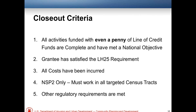To close out your grant, every activity funded with even a penny of line of credit funds needs to be complete and have met a national objective. 'Complete' means you've acquired a home, rehabbed it, and placed a family inside — either through rental or sale. You need to have satisfied the LH25 requirement — housing individuals at 25% AMI or below. All costs need to have been incurred. For NSP-2, you must have worked in all the targeted census tracts identified in your application, or amend it. Any other regulatory requirements need to have been met.